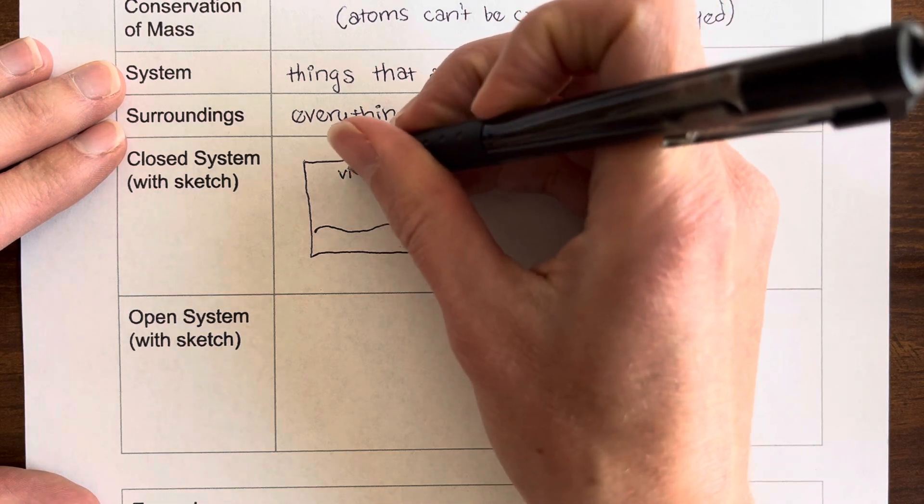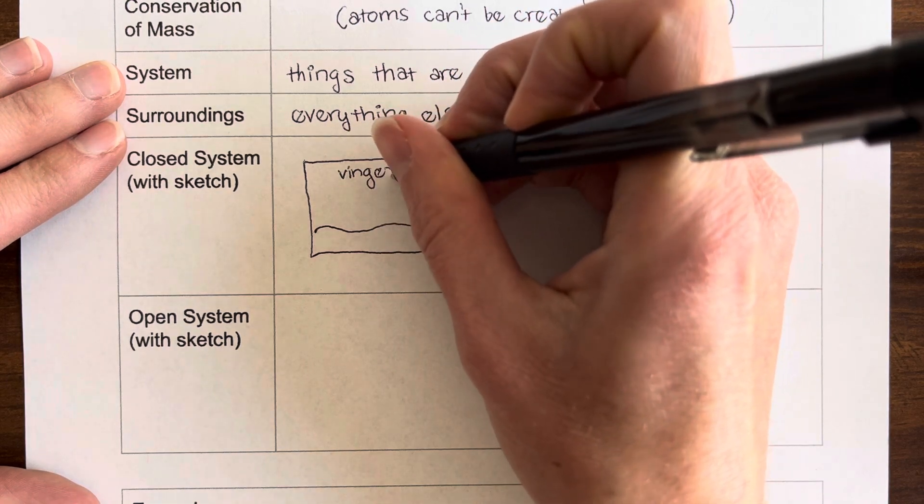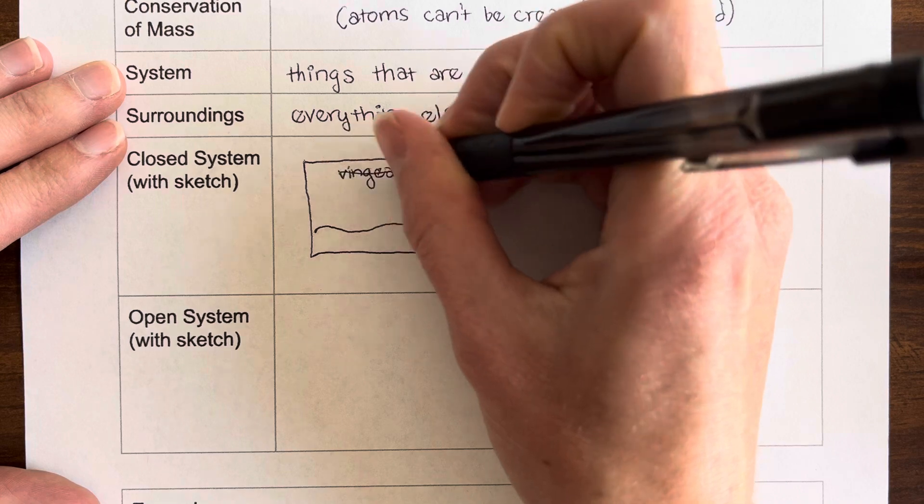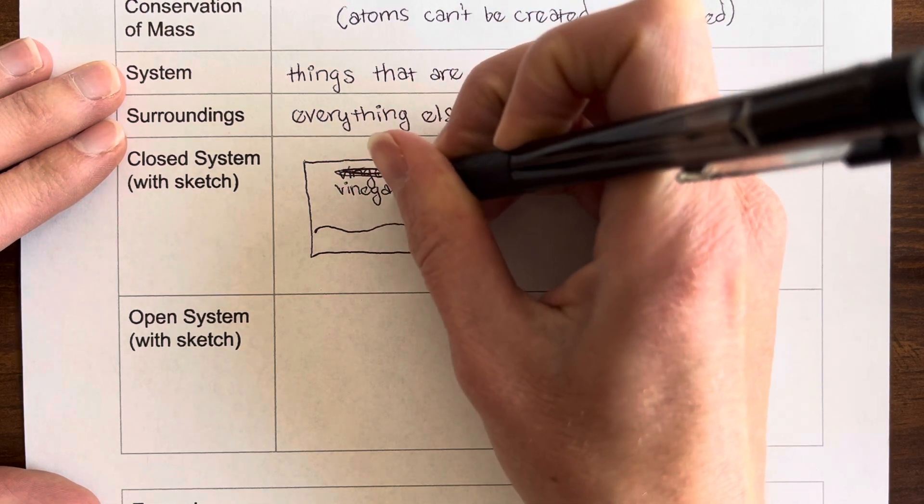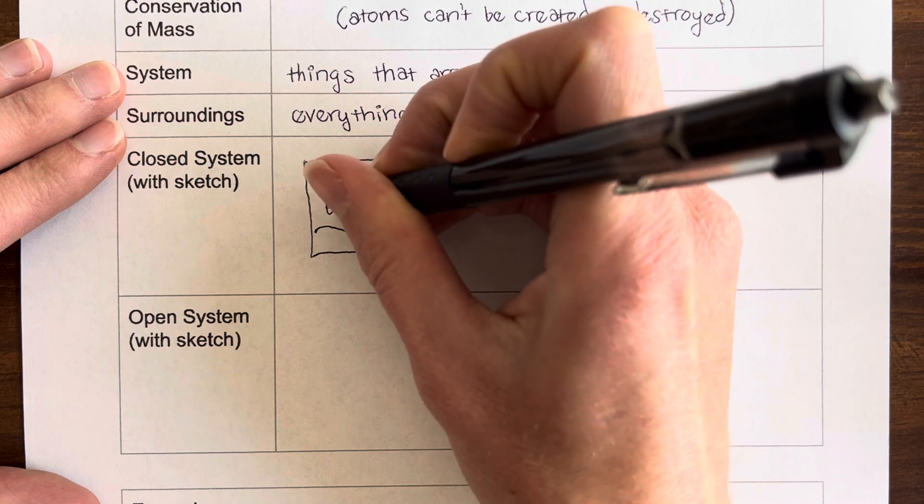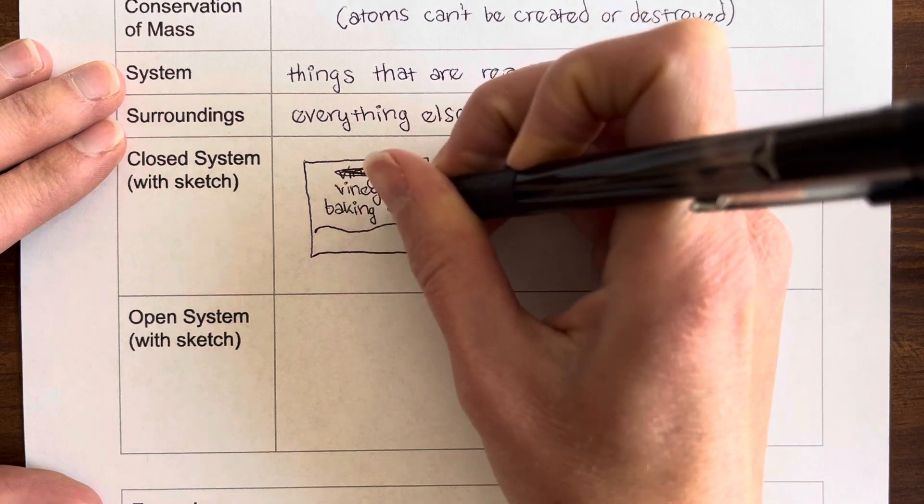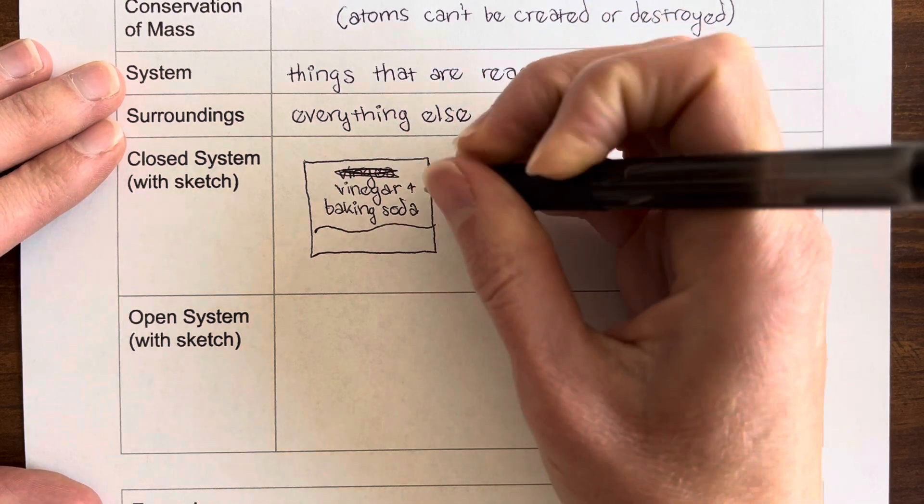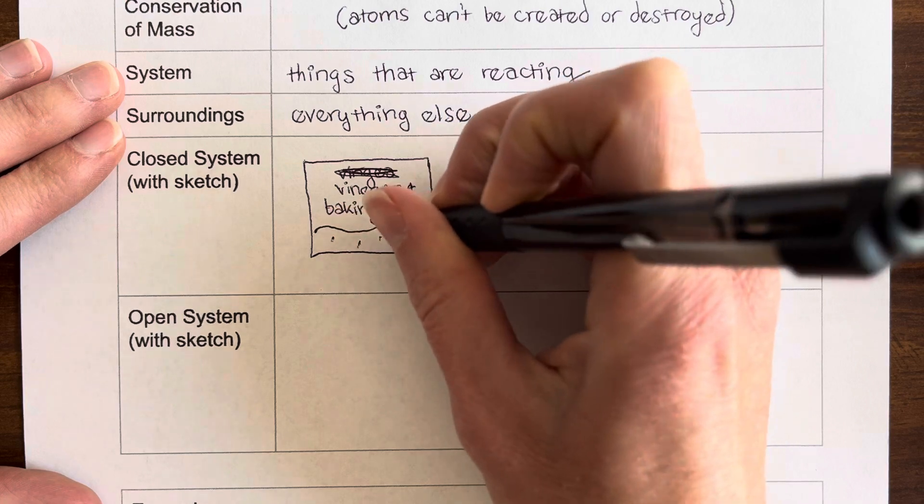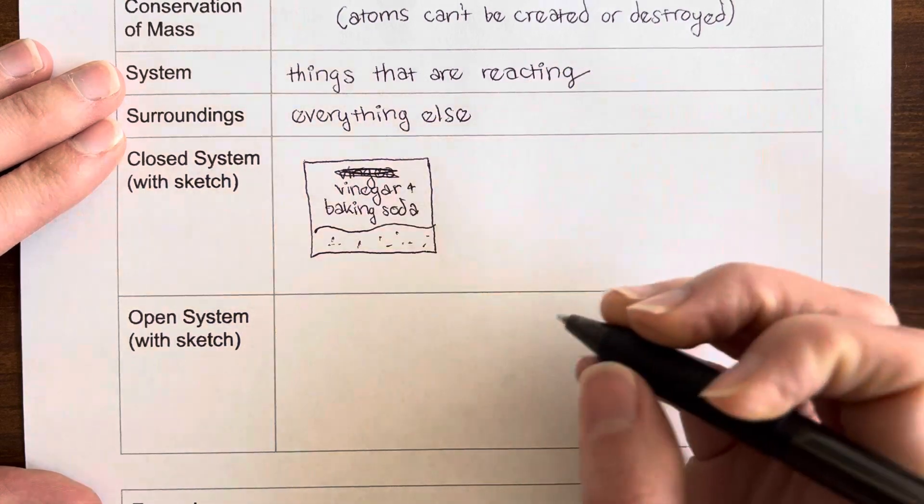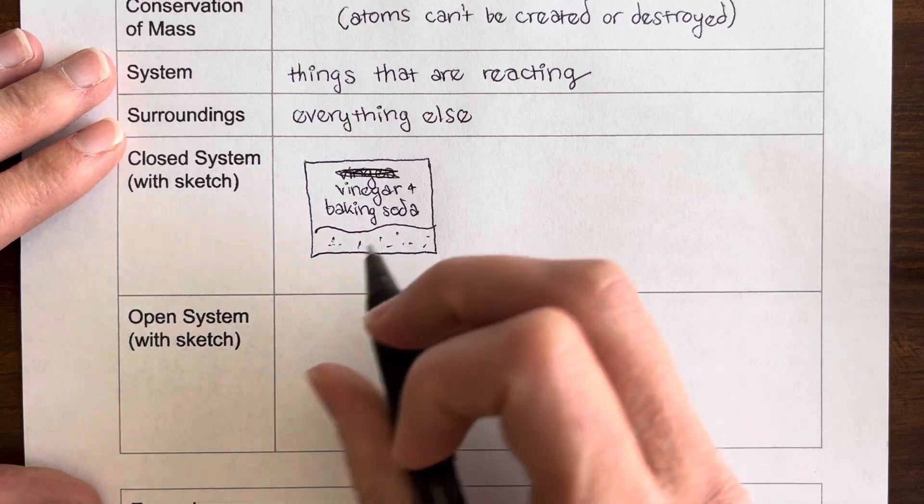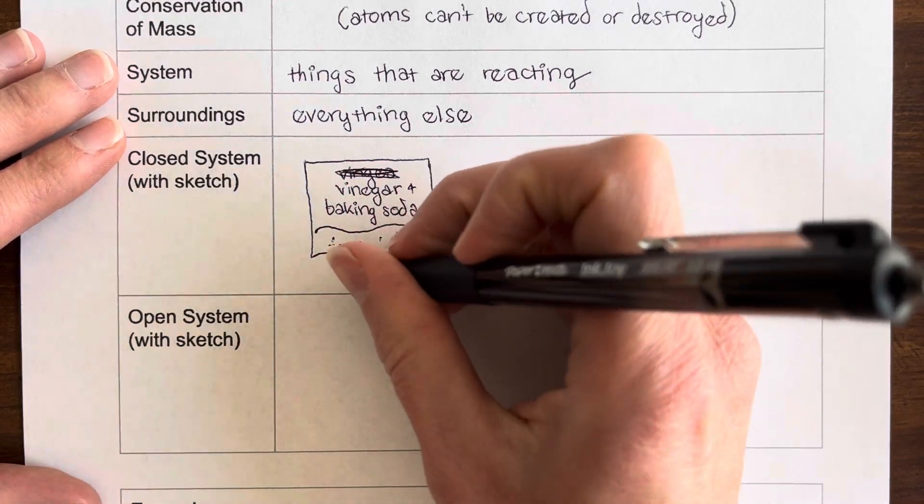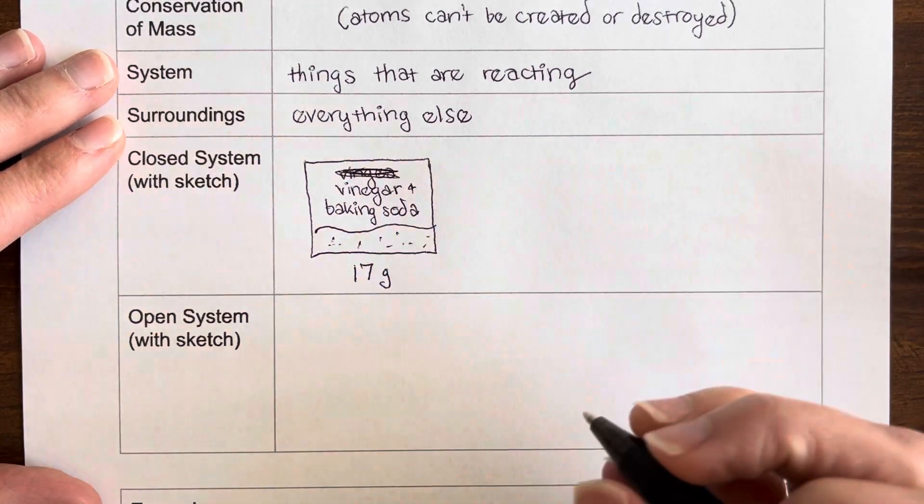Let's do a simple one. Let's say we're reacting vinegar and baking soda. And hopefully you know what happens when you react vinegar and baking soda. A gas is created. Let's say that we weigh the vinegar and the baking soda before the reaction happens, and the mass is 17 grams.